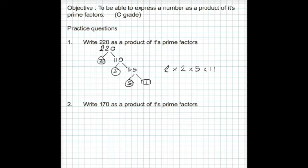The second one, 170 as a product of its prime factors. So we start off the same again. If we halve 170, you get 85. 2 times 85 gives us 170.